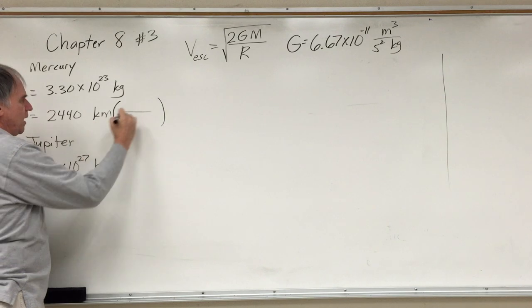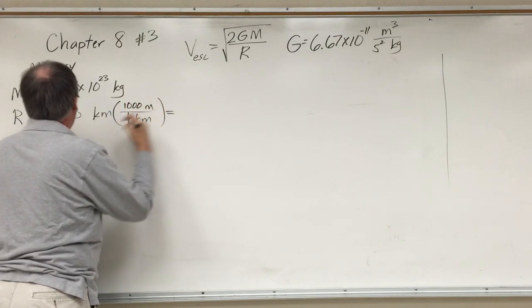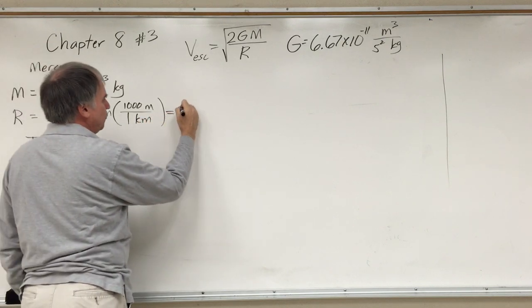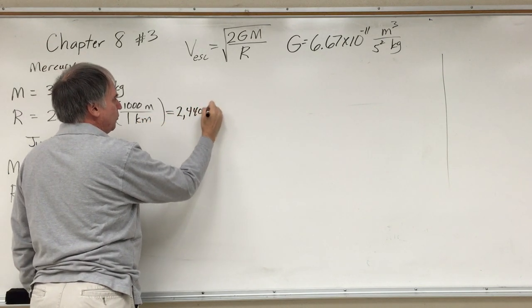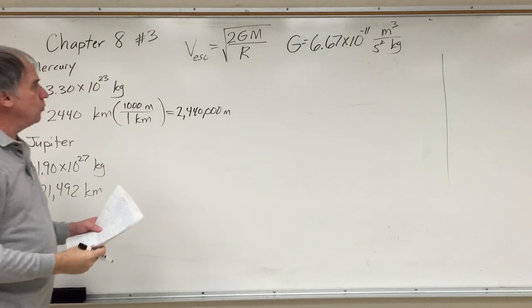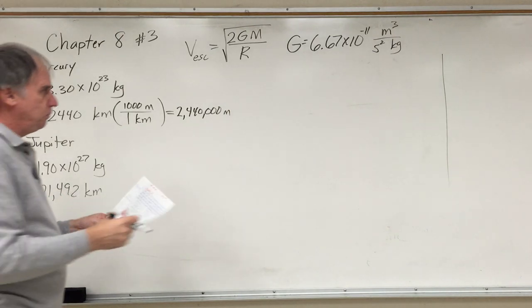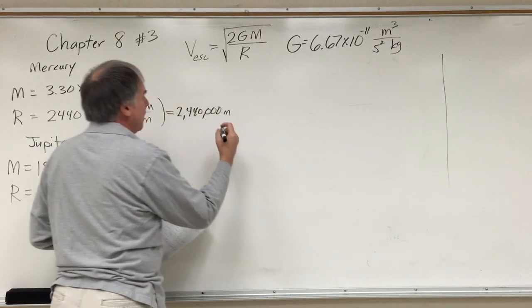Sometime we'll need to make a conversion between kilometers and meters. Let's do that right now. Right here, right now, every one kilometer is a thousand meters. So this radius is 2,440,000 meters. Now, I'm ready to calculate the escape velocity of Mercury.